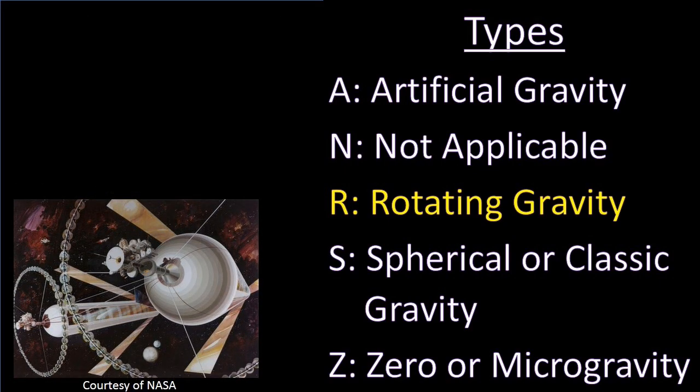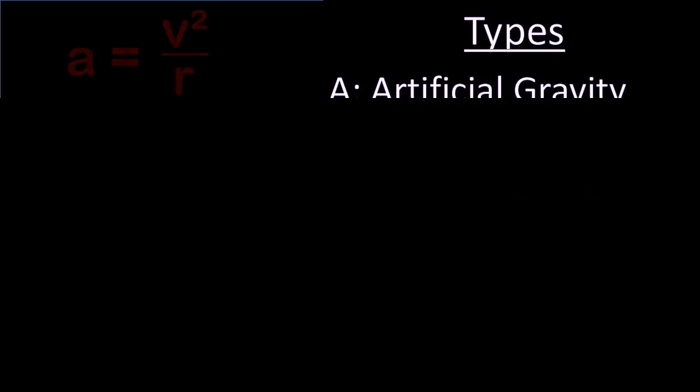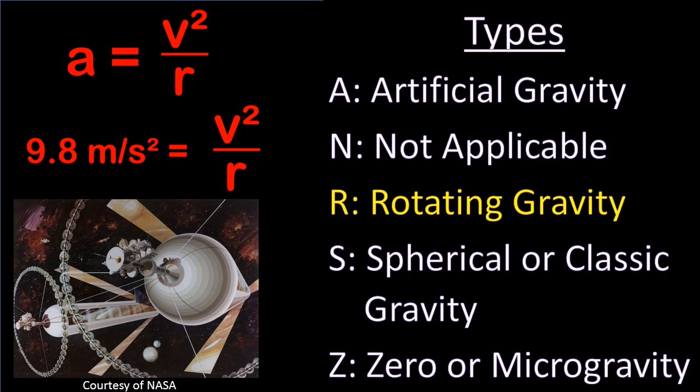We're also going to try to avoid getting too math heavy, but there is an equation that's relevant for rotating habitats that matters. The acceleration, which for Earth gravity would be 9.8 meters per second squared, that you would want to have to simulate gravity requires that you spin the station at a given velocity based on its radius, and that's the velocity squared divided by the radius.